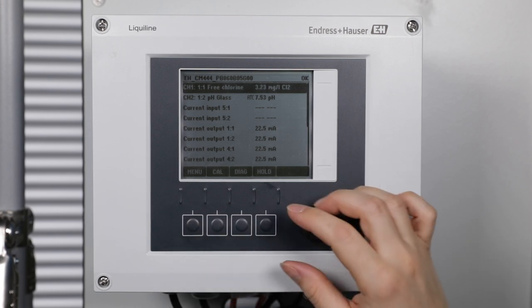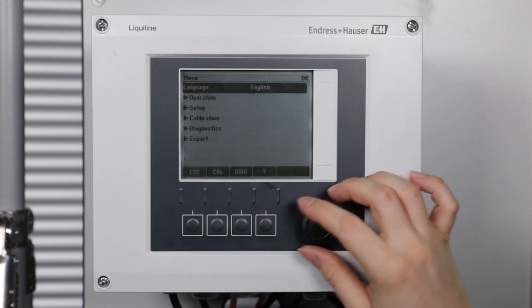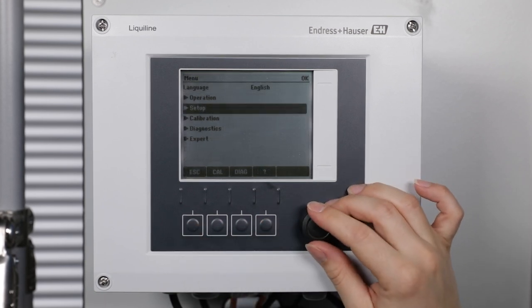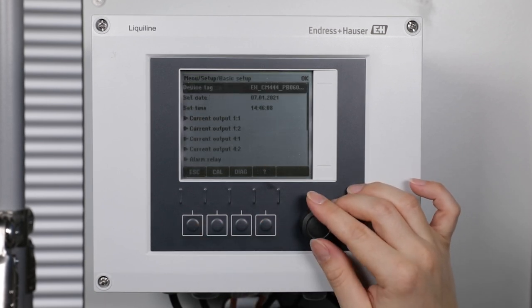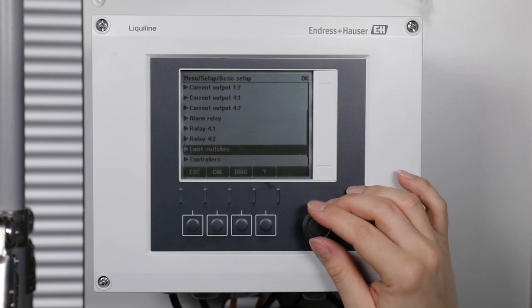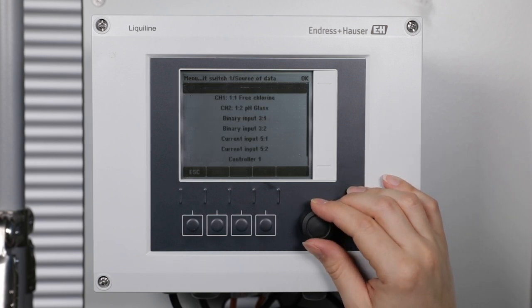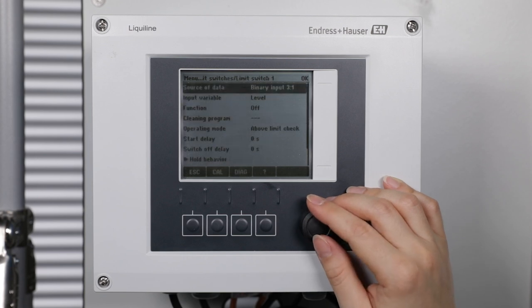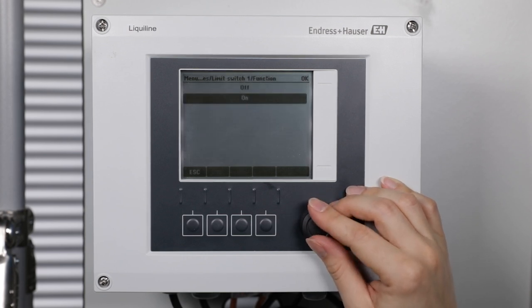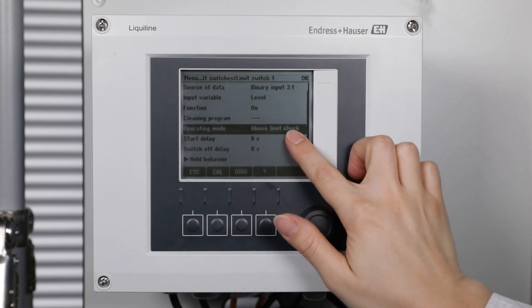Then assign a limit connected to the binary input in menu, setup, basic setup, limit switches, limit switch 1 and select the options: binary input as source of data, function on and operating mode above limit check.